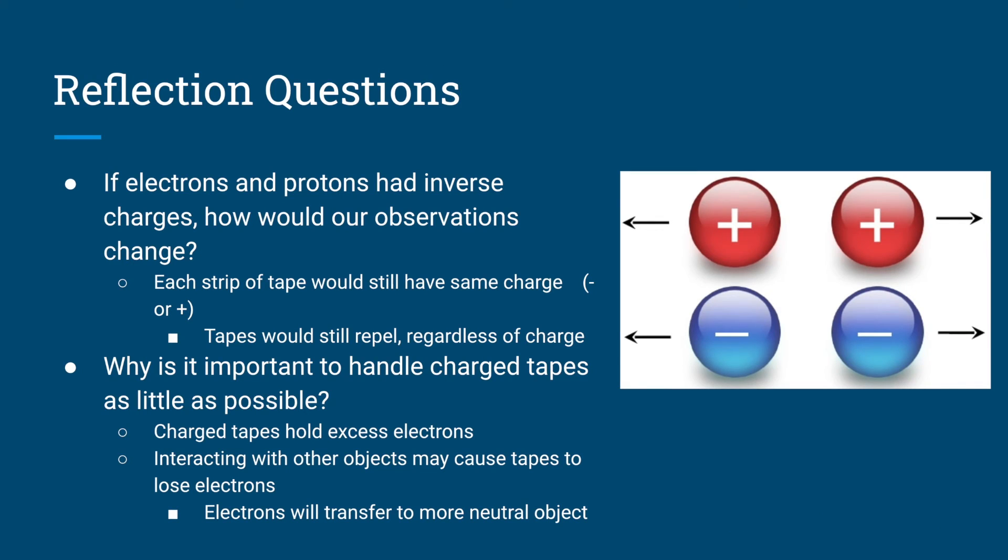Now, to answer the lab's reflection questions, let's consider: If the electrons and protons had inverse charges, how would our observations change? The answer is that both tapes would still have the same absolute charge, just with a different sign. The tapes would still repel, regardless of the charge shared by the tapes, as visualized to the right.